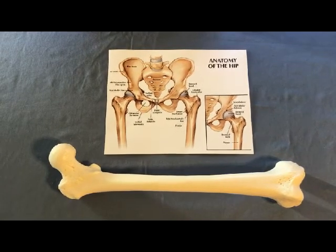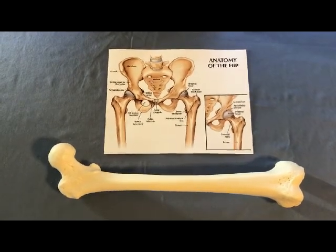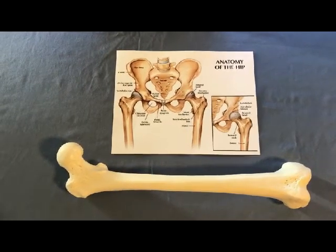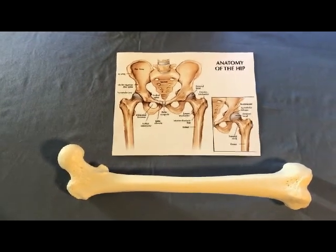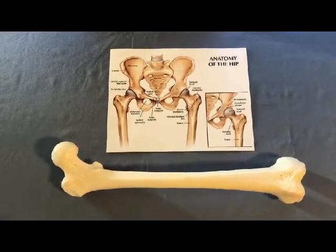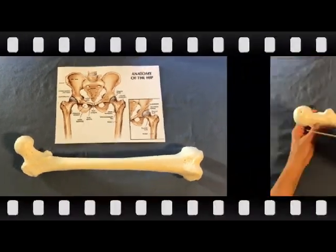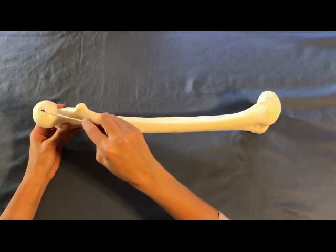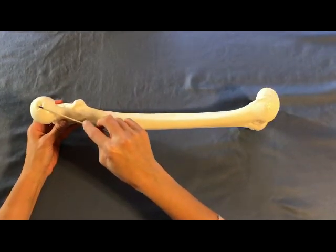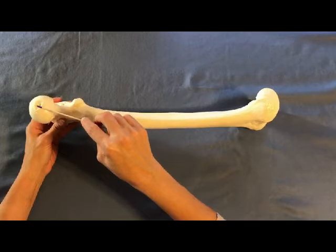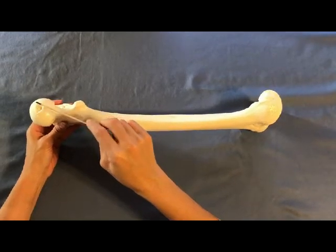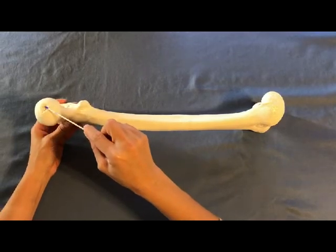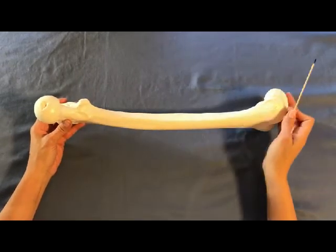Both the surface of the head of the femur and the acetabulum are covered with hyaline cartilage to provide a smooth surface for movement of the bones and prevent abrasion. The head of the femur has a small central pit known as the fovea capitis that serves as a ligament attachment point. The ligament of the head of the femur runs from the fovea capitis to the acetabulum of the hip bone.